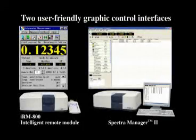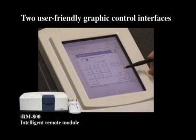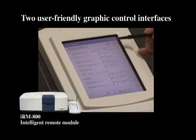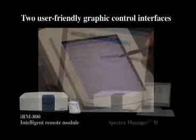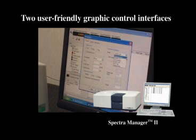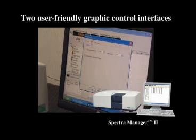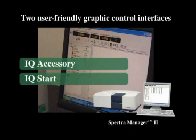Two user-friendly graphic control interfaces are available. The IRM's large touch screen guides the operator through all procedures. The obtained data can be printed using a USB printer or saved to a compact flash memory card for further processing on a PC. Jesco's unique cross-platform software, SpectreManager 2, provides full system control and advanced data processing. Light sources and filters currently in use are automatically recognized. The IQ accessory and IQ start features streamline procedures using automatic accessory recognition and automatic program start.